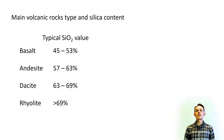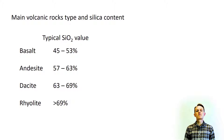The silica content of basalt is typically in the range of 45% to 53%, and rhyolite has a silica content in excess of 69%. Andesite and dacite are intermediate in silica content. Because of their high silica content, rhyolites are also referred to as silica-rich or silicic rocks.